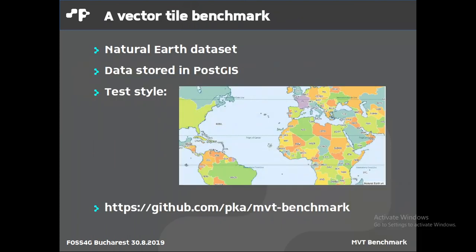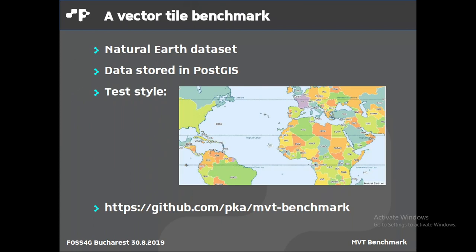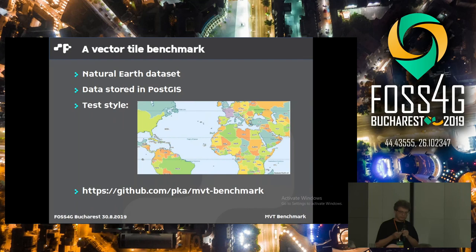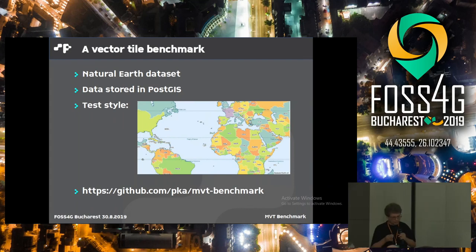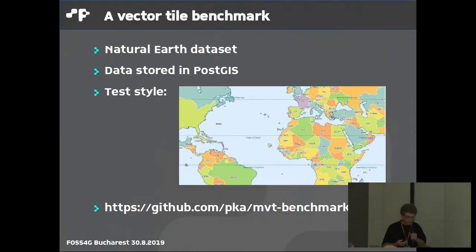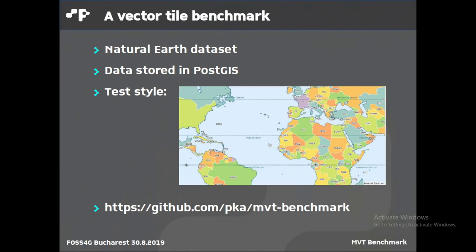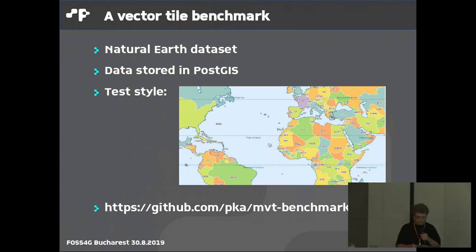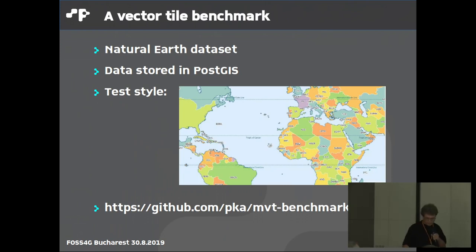Now we want to start the same with Vector Tiles. What we've chosen for benchmarking is the Natural Earth dataset. It is not as big as OSM, but it's not too small, so it's a good middle size for doing benchmarks. Data is stored in PostGIS — that's the starting point we've chosen. It's really a good base if you create your own Vector Tiles. The benchmark is public on GitHub — that's the only link we have in this talk.